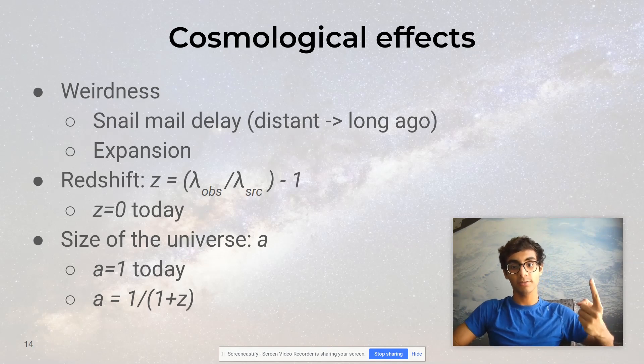So all four of these things—the expansion of space, the observed redshift, the distance to the object, and lookback time, which is how far in the past we're seeing—they're all related to each other.